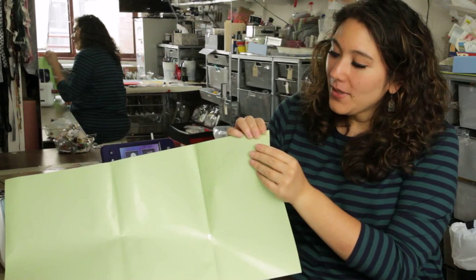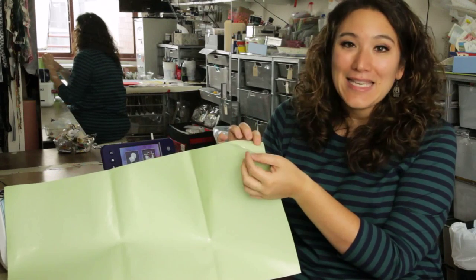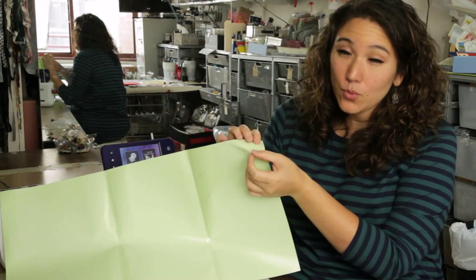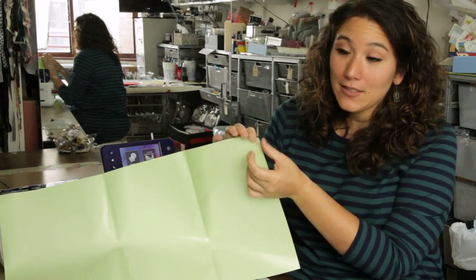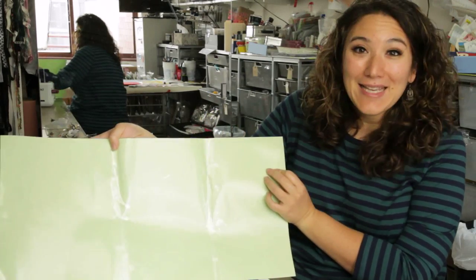What it is is a green backing with a clear sticky layer on top, so it's adhesive on the back and it's a repositionable light adhesive so that your stencil will stick to anything.